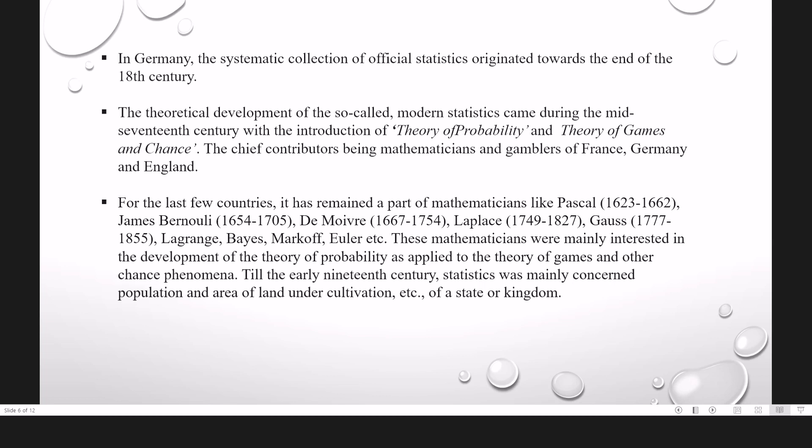And Gauss, who gave the principle of least squares and normal law of errors. Later on, most of the prominent mathematicians of the 18th, 19th and 20th centuries — Lagrange, Bayes, Markov, Keynes, Kolmogorov, to mention only a few — have made very outstanding contributions to the modern theory of probability.